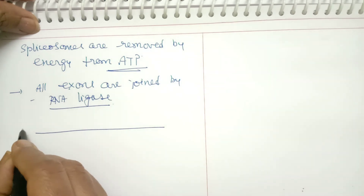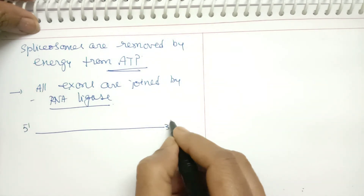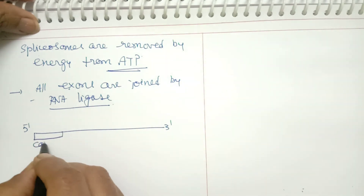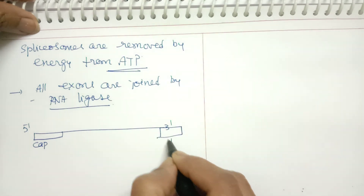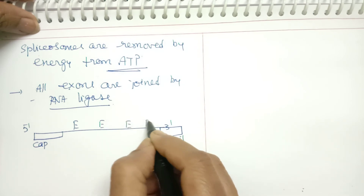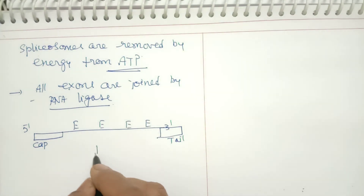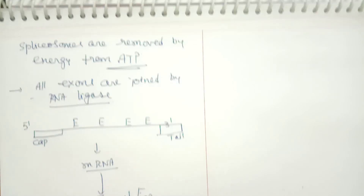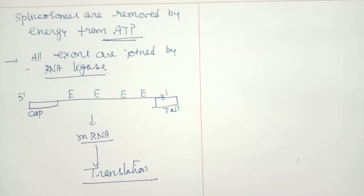At the end, we get a mature mRNA with a cap at the 5' end, a poly-A tail at the 3' end, and only exons in between. This mature mRNA can now participate in translation. This is the process of splicing, a post-transcriptional change taking place in eukaryotes.